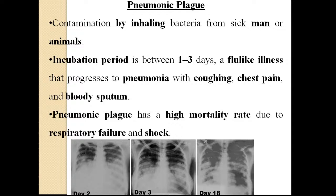Pneumonic plague develops after contamination by inhaling bacteria from sick humans or animals. The incubation period is one to three days. Initially the patient presents with flu-like symptoms that progress to pneumonia with coughing, chest pain, and bloody sputum — caused by destruction of blood vessels. Pneumonic plague has a higher mortality rate, with many patients dying due to respiratory failure and shock. This form develops faster than others.